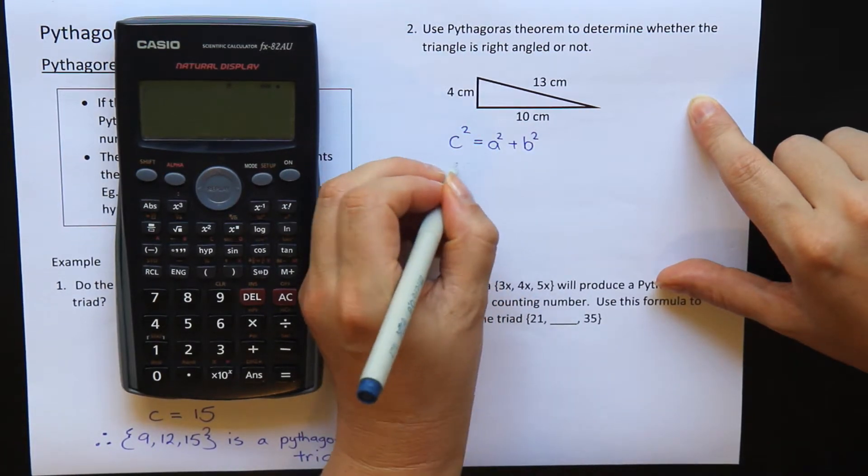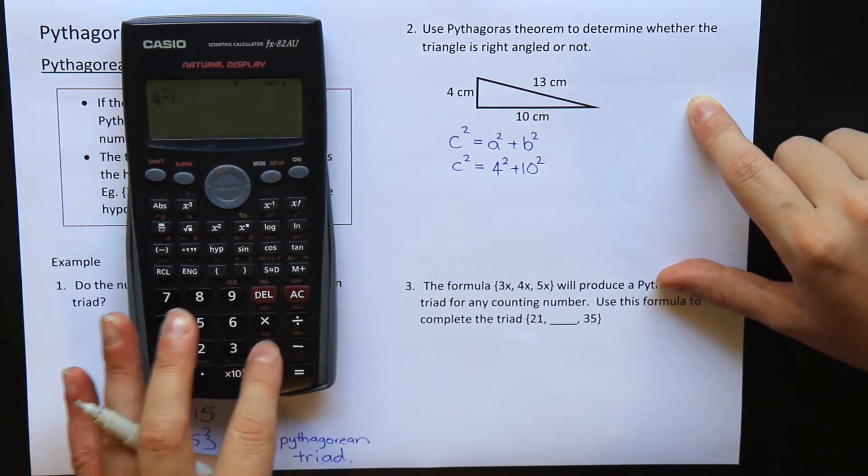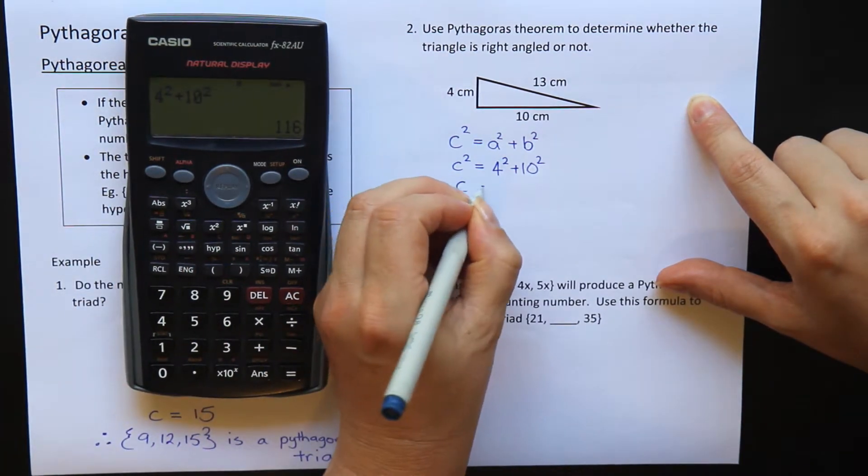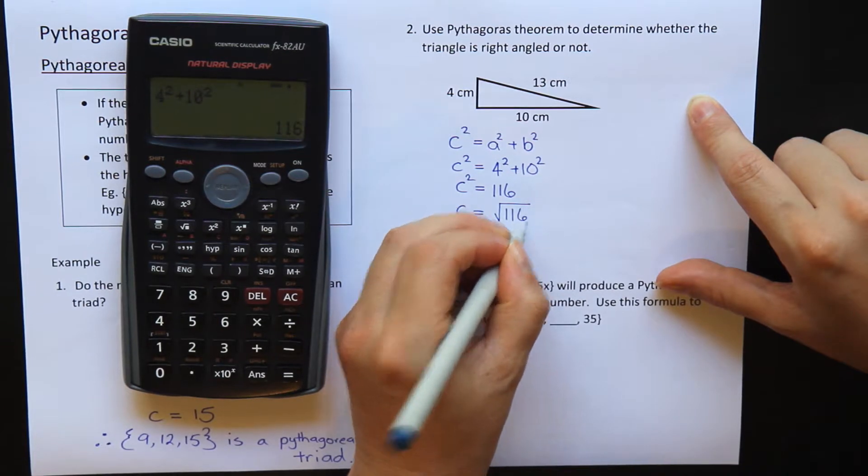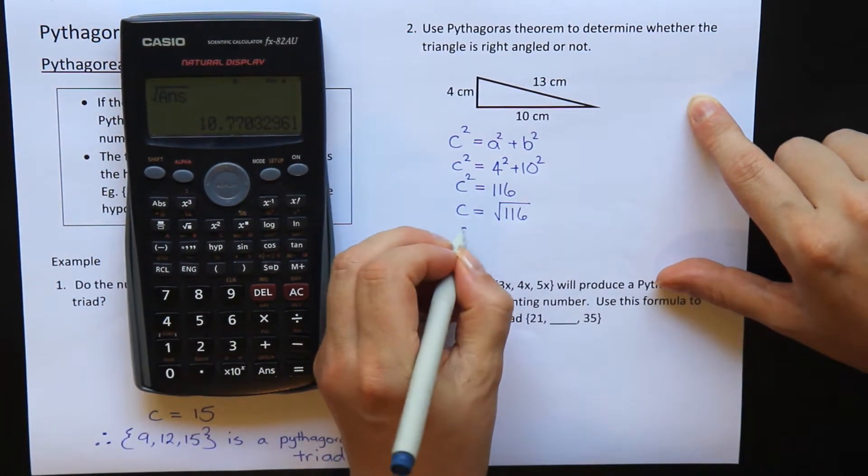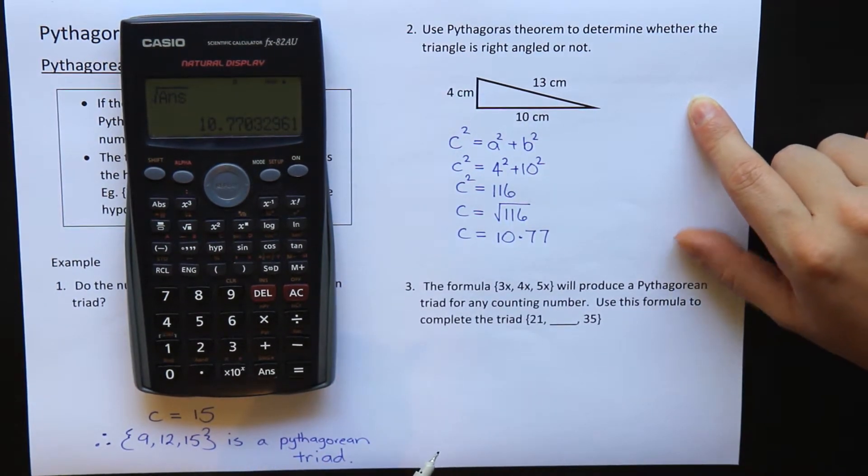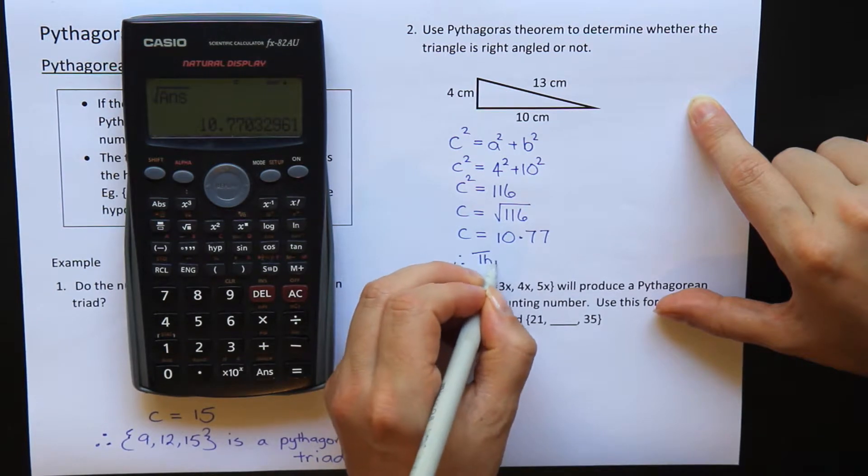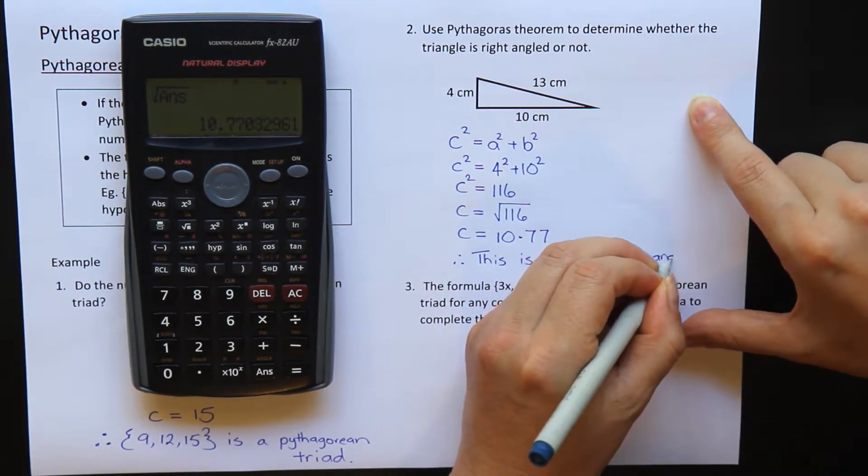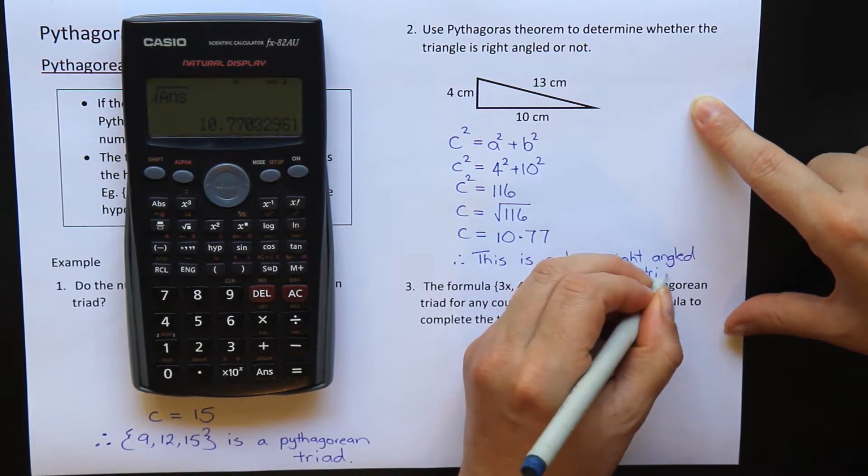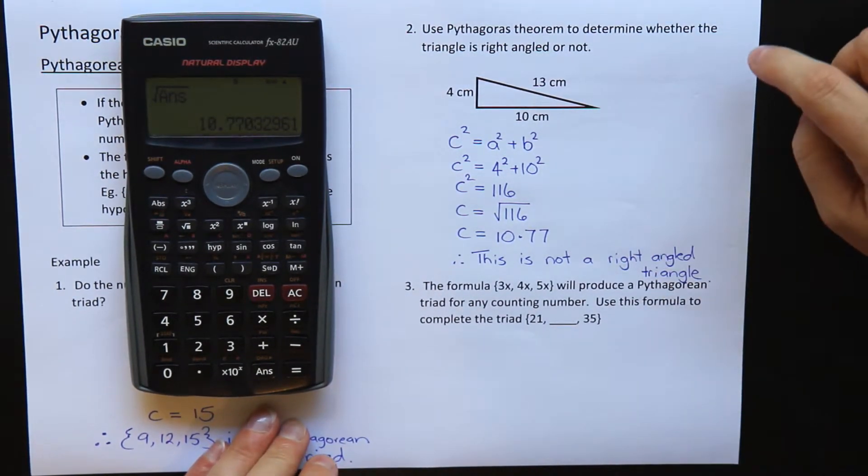Take my two shorter sides, 4 squared plus 10 squared. Let's calculate that. 4 squared plus 10 squared equals 116, and so then I'll need to square root that, and I get 10.77. Well, that's not the same. That's not 13. So therefore, this is not a right angle triangle, because if it was a right angle triangle, I should have got 10.77 as my hypotenuse.